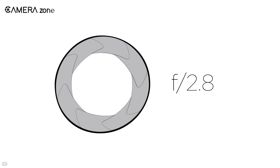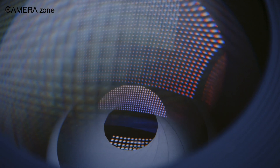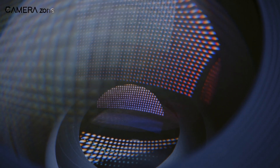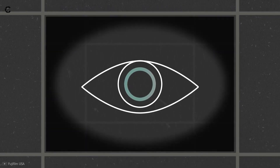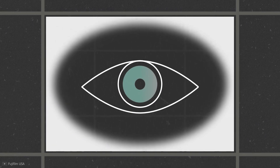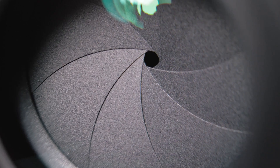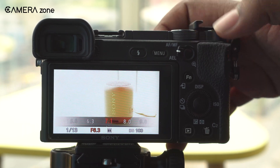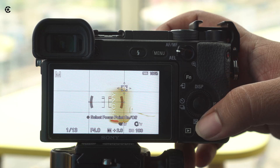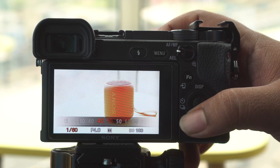Moving on to the last pillar of the exposure triangle: the aperture. The aperture is the gateway of the lens that lets light enter and fall on the sensor — it is much like the pupil of our eye. Just like the pupil gets larger or smaller, the aperture can be wide open to let more light into the sensor or narrower to let less light in. Like the other two pillars, the aperture lets you brighten or darken your image without touching the ISO or shutter speed.